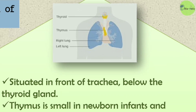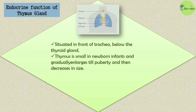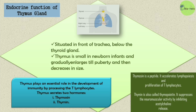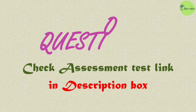Next is the thymus gland and its endocrine function. The thymus gland is situated between the lungs, in front of the trachea and below the thyroid gland. It is small in newborn infants, gradually enlarges until puberty, and then decreases in size. The thymus plays an essential role in the development of immunity by processing T lymphocytes. The thymus gland secretes two hormones: thymosine and thymin. Thymosine is a peptide that accelerates lymphopoiesis and proliferation of T lymphocytes. Thymin, also called thymopoietin, suppresses neuromuscular activity by inhibiting acetylcholine release.